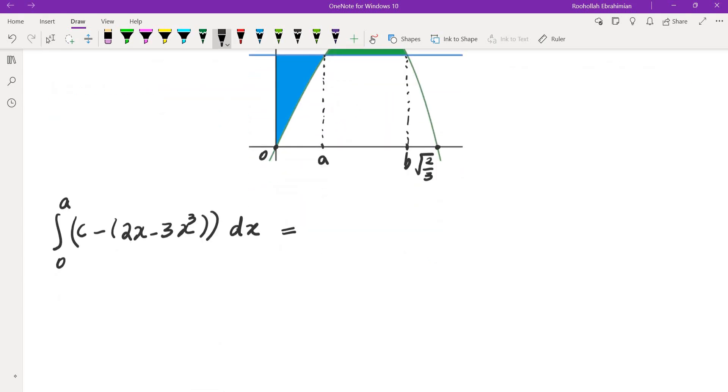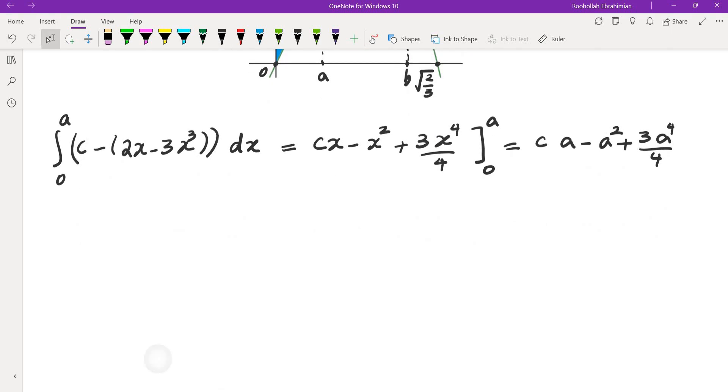Let's evaluate this one. When we integrate this we get cx minus x squared and then plus 3x to the fourth over 4, from 0 to A. Substituting A we get cA minus a squared plus 3a to the fourth over 4. This is the blue area.